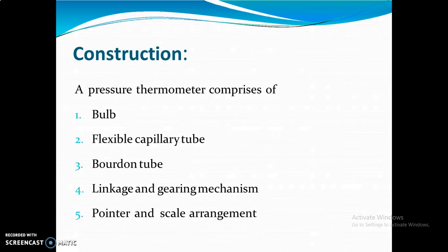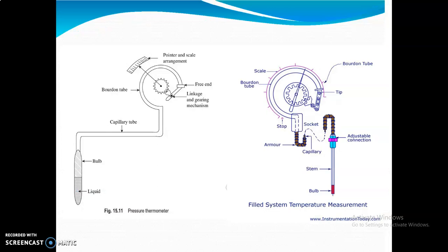The pressure thermometer consists of several devices: a bulb, a capillary tube, a Boudin tube, a linkage and gearing mechanism, and a pointer and scale arrangement. You can just look at the diagram here — your diagram is shown here.